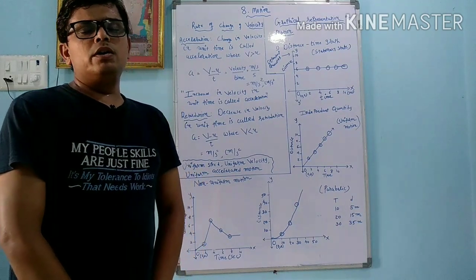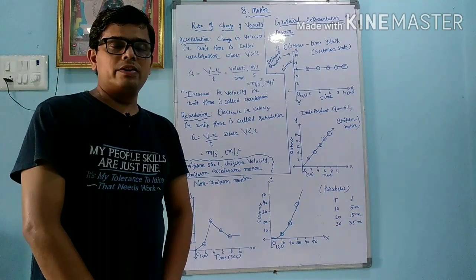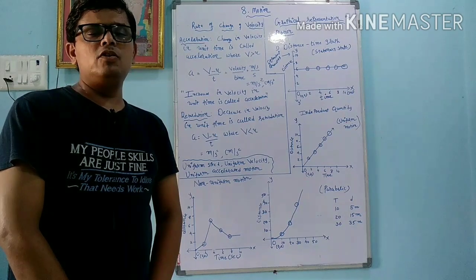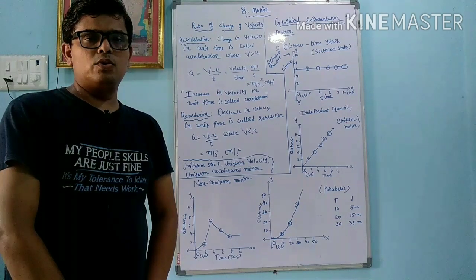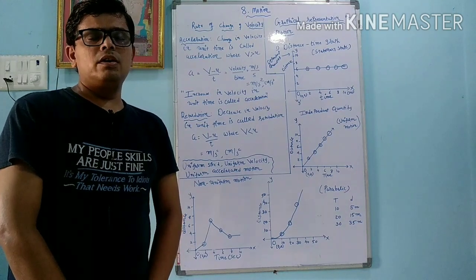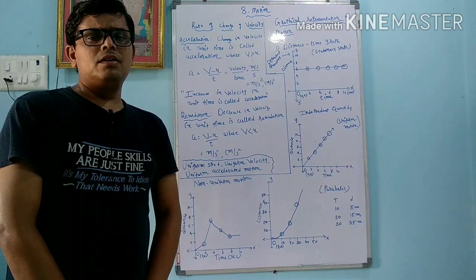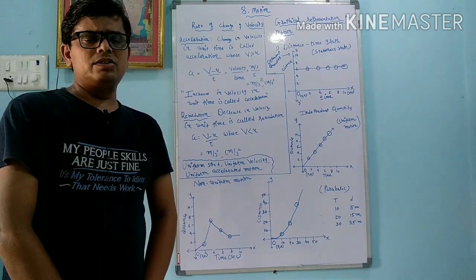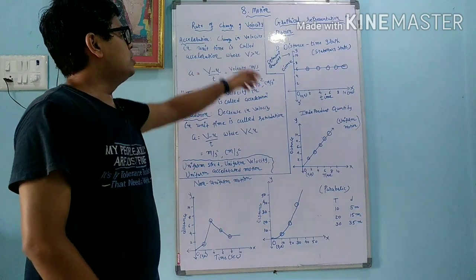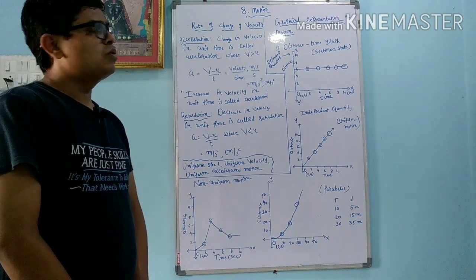Whenever you hear the word acceleration, you automatically remember the accelerator. So what is the use of an accelerator? It increases the speed of the vehicle. The definition of acceleration is: the increase in speed in unit time is called acceleration. Another definition: change in velocity in unit time is also called acceleration.